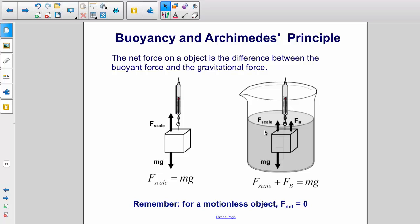Now, an object that is suspended in a fluid has an extra force applied to it, an upward force that we know about, the buoyant force. So in this case, we have two upward forces, the scale force and the buoyant force to balance the downward force of mg.